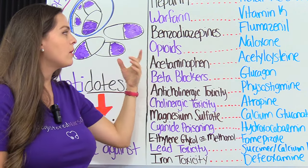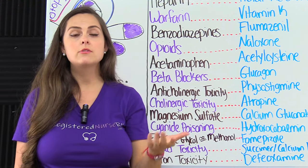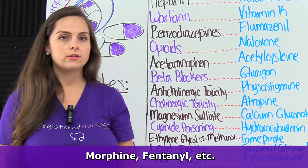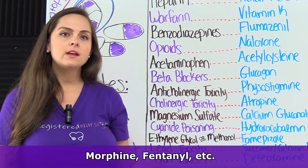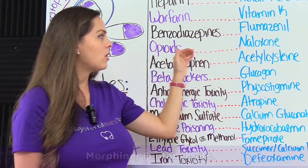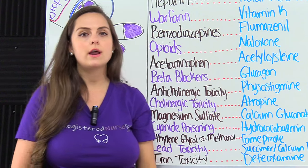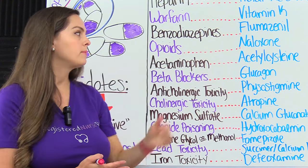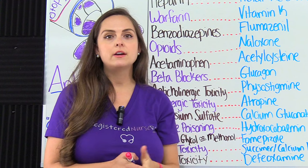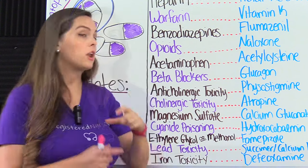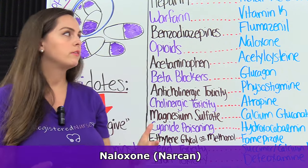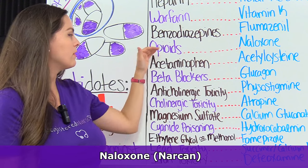Then we have opioids. Opioids, just like benzos, are highly addictive. They are painkillers — we're talking about drugs like morphine, fentanyl, etc. We can give what's called naloxone as an antidote for that. You've probably heard a lot about the opioid issues here in the U.S. Narcan is another name for this — we can give that to reverse the effects of opioids.